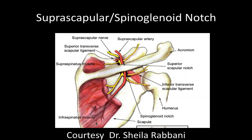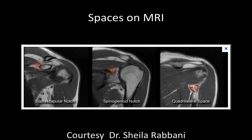The suprascapular nerve comes up here and innervates — it has a branch going to the supraspinatus muscle. More inferiorly it has branches — I should say this comes from the suprascapular nerve, not the axillary nerve. More distally, if you have a cyst that compresses the nerve, you'll just get involvement of the infraspinatus muscle, whereas higher up you can get both muscles involved.